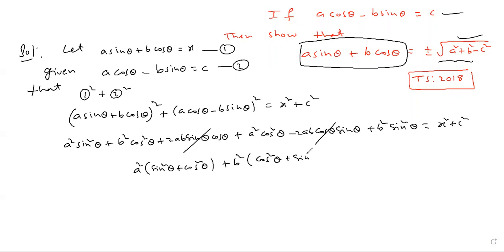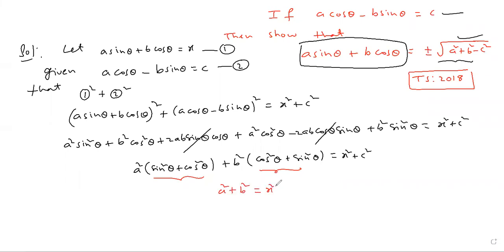Taking a square common, we get sin square theta plus cos square theta equals 1, and similarly for b square. So a square plus b square equals x square plus c square. Therefore, a square plus b square minus c square equals x square.